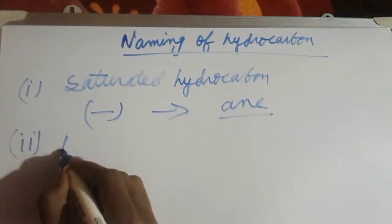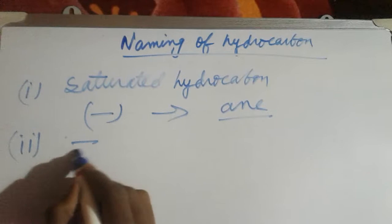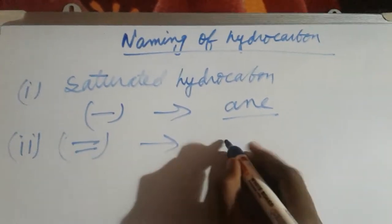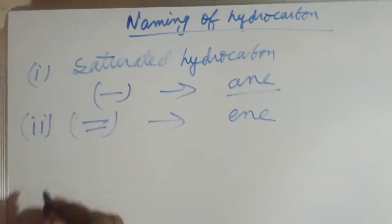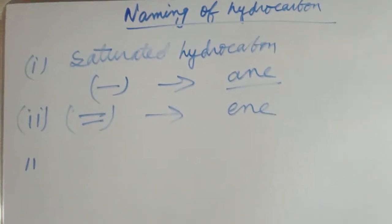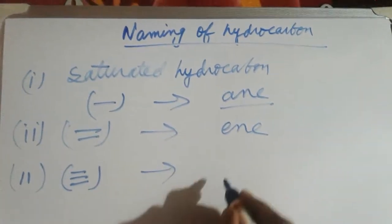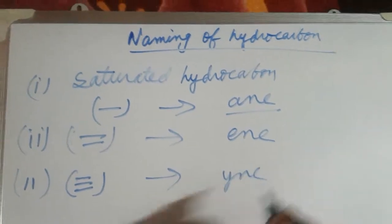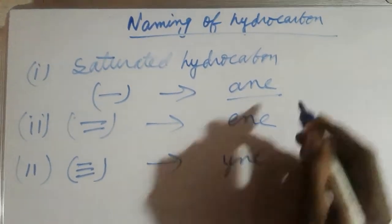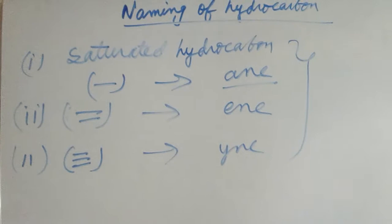If there is a double bond, the suffix is '-ene.' If there is a triple bond, the suffix is '-yne.' This covers the basics of naming hydrocarbons.